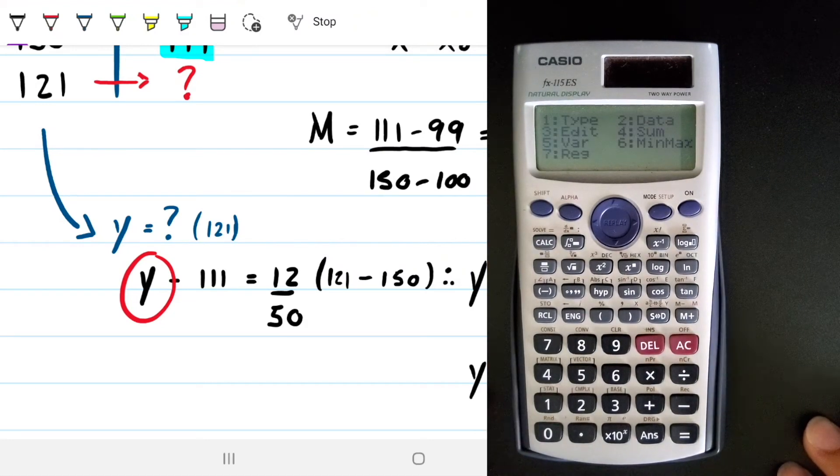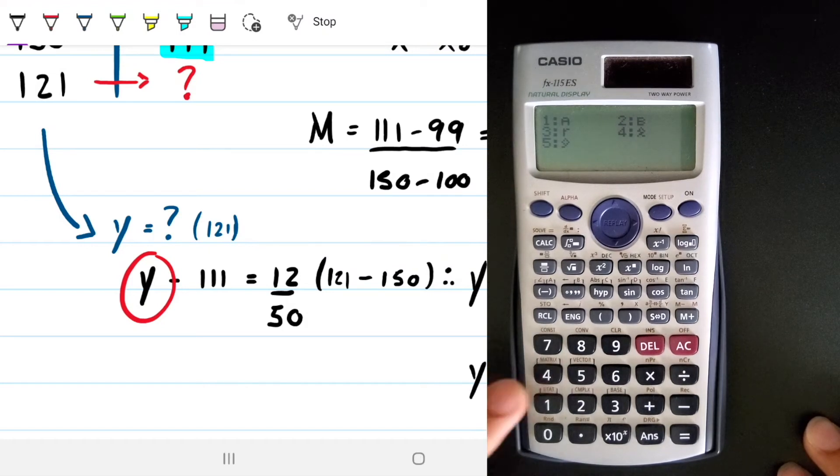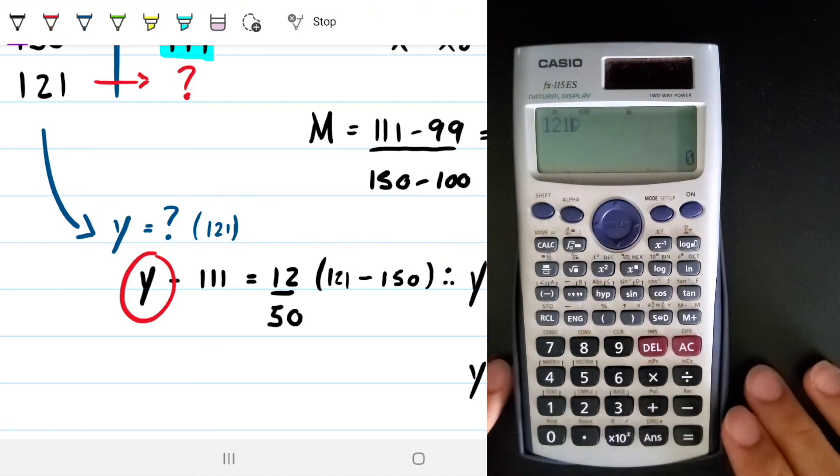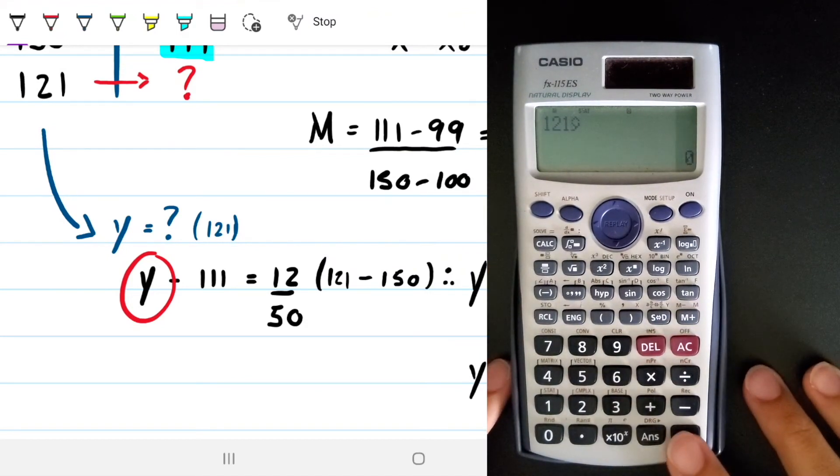And I want to do regression, that's number seven. And I want to solve that for Y. So I want to solve it for Y. And what value do I want to solve it for? Well, I want to solve it for 121. So 121, solve it for Y. And I press equal.